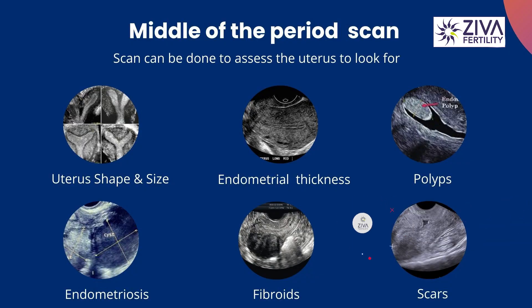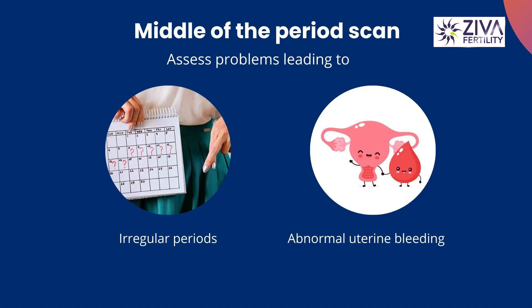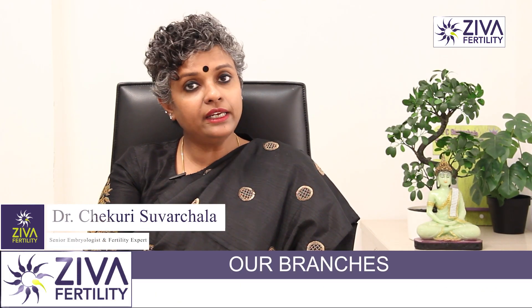Since we're talking about infertility, we'll stick to your period cycle and assess what scans are done at what period. If you are in the middle of your period, whether you're on day 10, 12, 13, or 14, a scan can be done to assess your uterus — its shape, size, if there are any fibroids, polyps, scars, or severe-stage endometriosis causing internal damage. We can also assess problems leading to irregular periods, breakthrough bleedings, or very little bleeding. All these can be assessed by a scan done any time during your cycle.